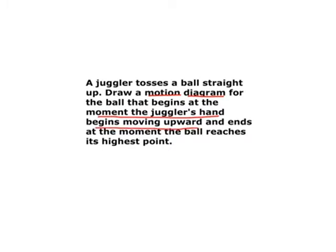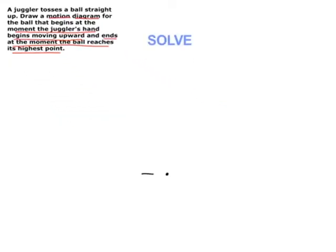We're beginning at the moment the juggler's hand begins moving upward, and so that is the juggler pushing the ball upward. It ends at the moment the ball reaches its highest point. That's shown us physically the important pieces of the motion. When we draw a motion diagram, we start by making a series of points that represent the subsequent positions of the object. We start with where the motion starts — the ball is in the juggler's hand and it's going to move upward.